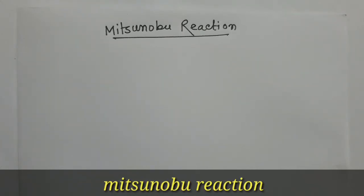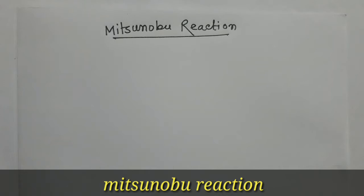Today I am going to discuss the Mitsunobu reaction. The Mitsunobu reaction is an organic reaction that converts alcohol into a variety of functional groups by using triphenylphosphine and an azodicarboxylate such as diethylazodicarboxylate or diisopropylazodicarboxylate. In this reaction, the stereochemistry will be inverted because the reaction proceeds via an SN2 reaction pathway.